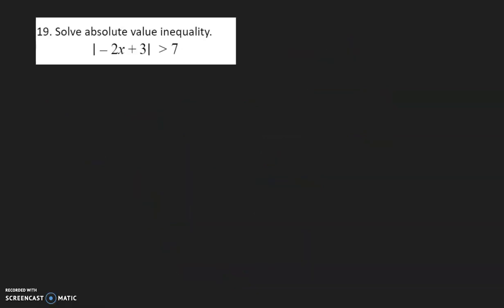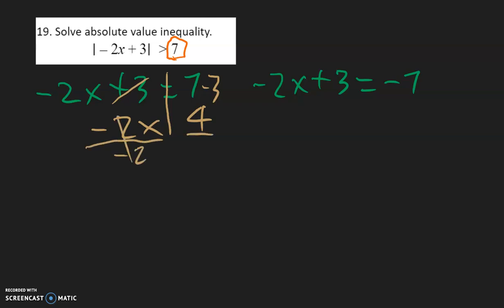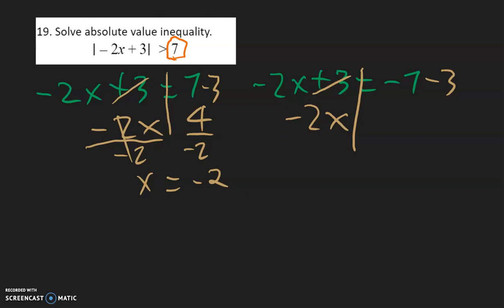Number 19. We know we need to write two equations because of this positive 7. The first equation will be negative 2x plus 3 equal to 7. The second one will be negative 2x plus 3 equal to negative 7. To solve, we move the 3, so that becomes negative 3 on this side. 7 minus 3 is 4. Copy down the negative 2x, then divide both sides by negative 2. x equals 4 divided by negative 2, which is negative 2. For the second equation, we bring the 3 to the other side as negative 3. Negative 2x equals negative 7 minus 3, which is negative 10. Divide both sides by negative 2, so x is equal to positive 5.